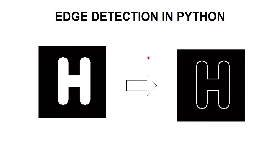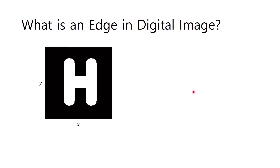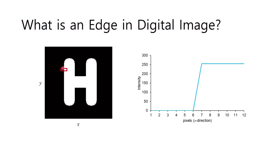Hello everybody and welcome to this channel. In this video we will learn how to do edge detection in Python. First of all, what is an edge in a digital image? Here I have an image of letter H. If we plot the pixel intensity value in the horizontal direction, we will get a graph like this. Zero intensity is the black color and 255 intensity is the white color.